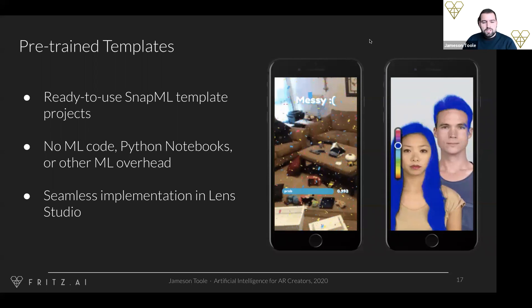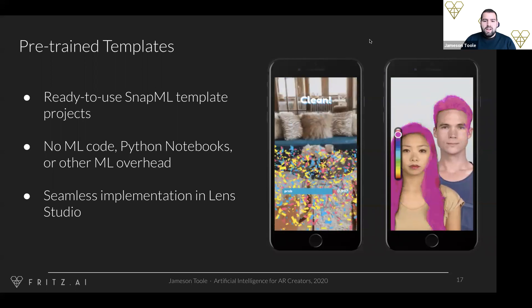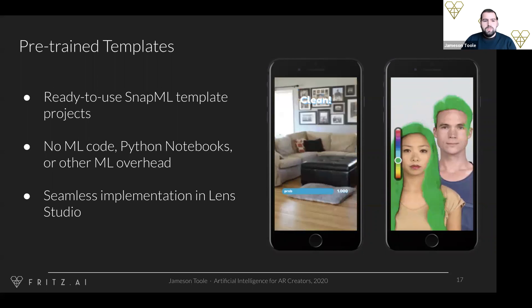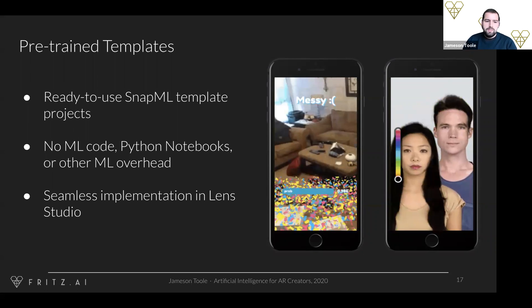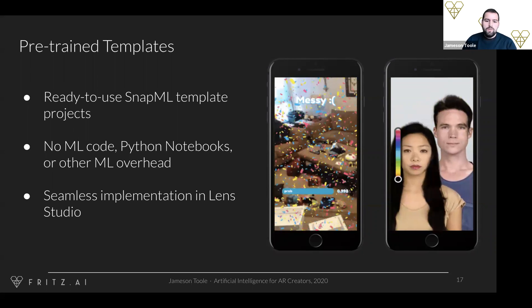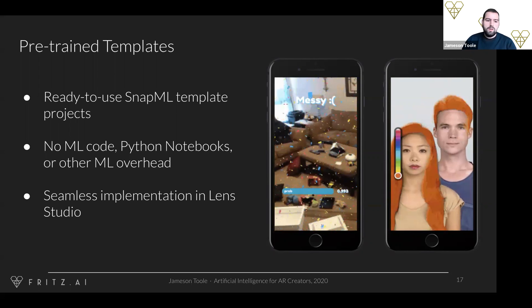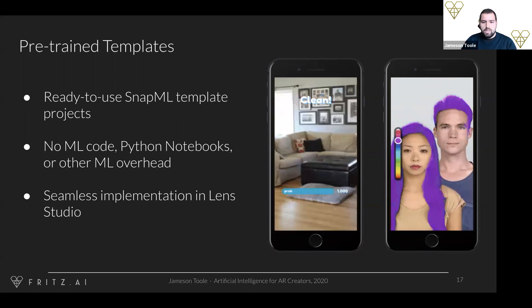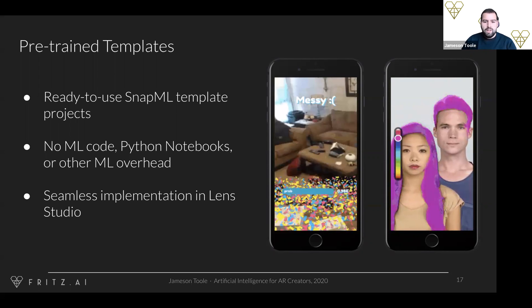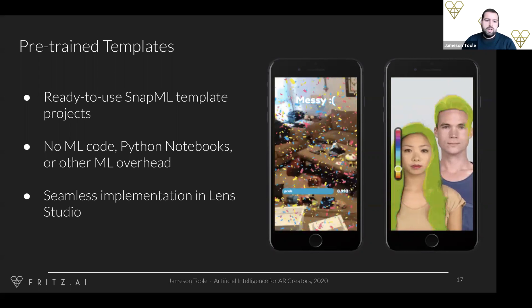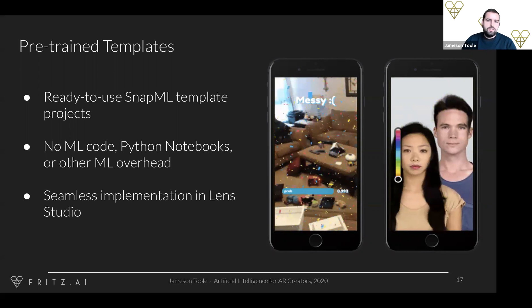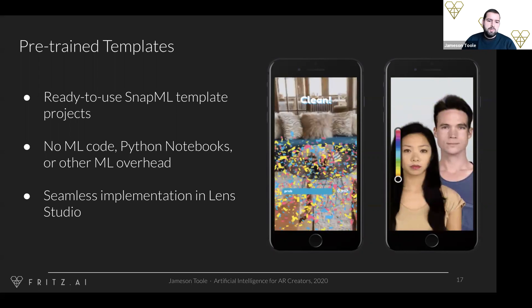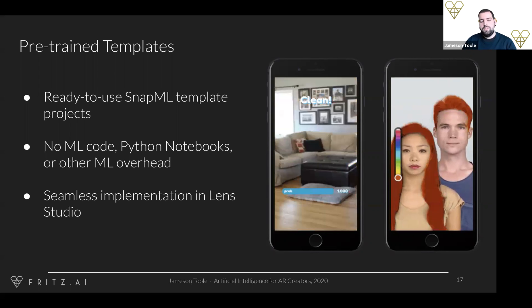Pre-trained templates are probably the easiest way to get started with AI and AR. These are ready-to-use Snap ML templates — we've already done the work to hook up the models to the actual AR effects, we've trained the models ourselves, you don't have to write any ML code or deal with Python notebooks or statistics. It's really easy to download these projects, see them running, and start playing around with them.